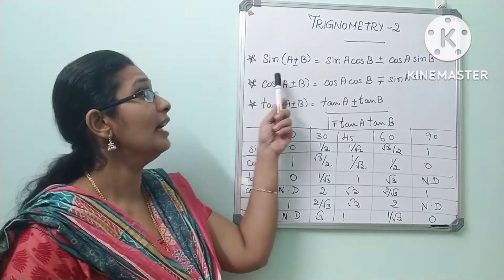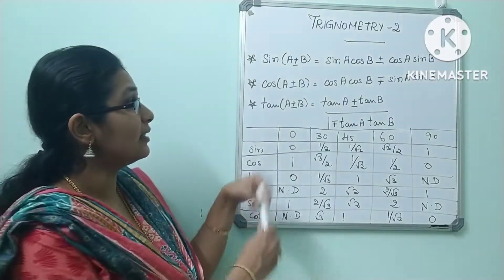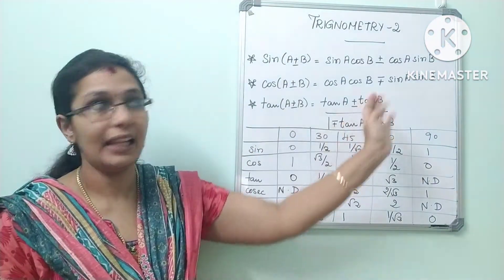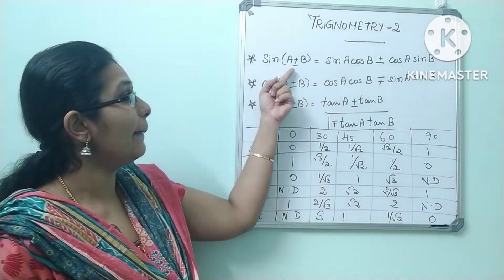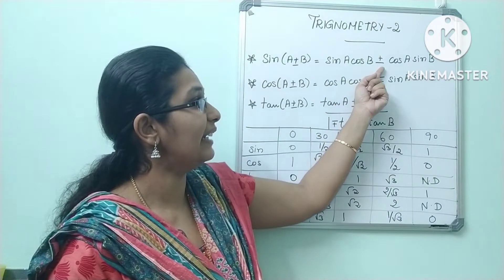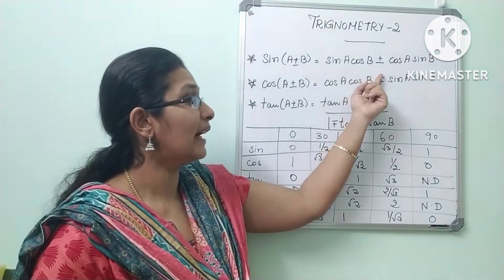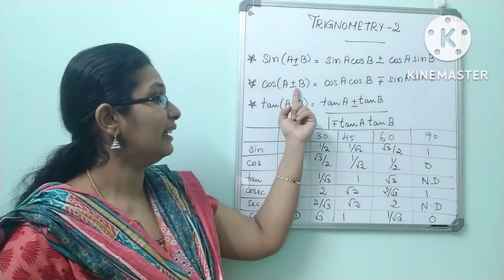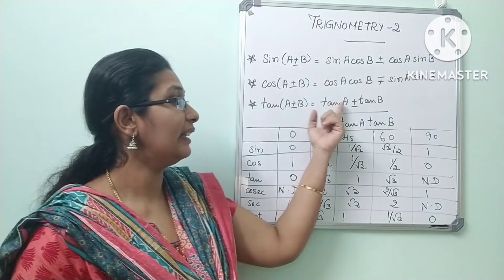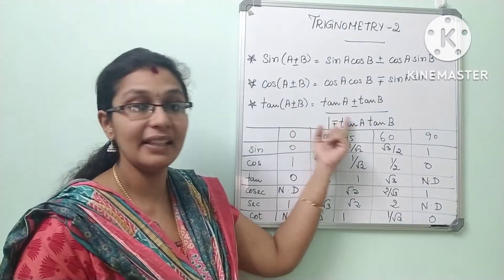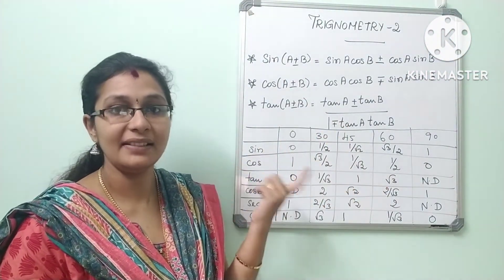Now we are going to talk about sin(a+b) = sin a cos b + cos a sin b. Sin(a−b) = sin a cos b − cos a sin b. For tan: tan(a+b) = (tan a + tan b) / (1 − tan a tan b), and tan(a−b) = (tan a − tan b) / (1 + tan a tan b).